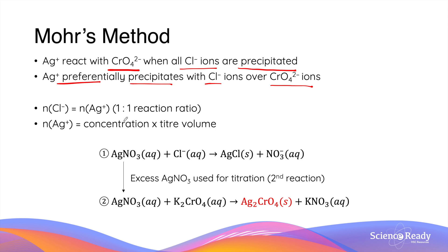Secondly, the number of moles of chloride ions in the solution equals the number of moles of silver ions, due to the one-to-one stoichiometric ratio in their precipitation reaction. The number of moles of silver ions is calculated by multiplying its concentration by the titer volume recorded in the burette when the endpoint is observed.